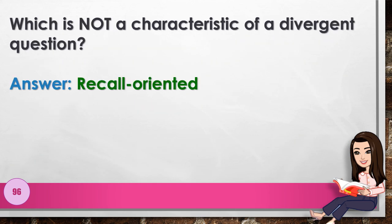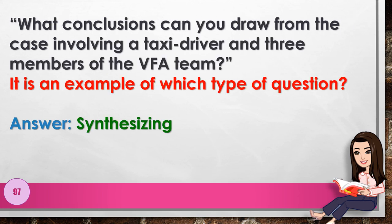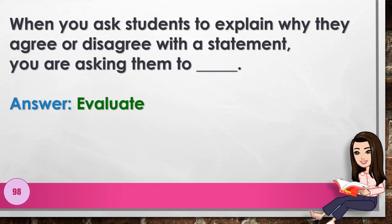Number 96: Which is not a characteristic of a divergent question? Answer: recall-oriented. Number 97: 'What conclusions can you draw from the case involving a taxi driver and three members of the VFA team?' It is an example of which type of question? Answer: synthesizing. Number 98: When you ask students to explain why they agree or disagree with a statement, you are asking them to blank. Answer: evaluate.